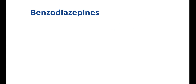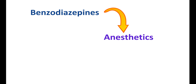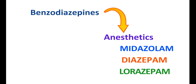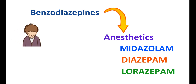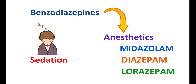Benzodiazepines can be used for many conditions and few of them are used as anesthetics by intravenous route. For example, drugs like Midazolam, Diazepam, and Lorazepam are used as IV anesthetics. However, they can induce sedation in people after anesthesia, so post-operative or post-anesthetic sedation can be produced by Benzodiazepines.